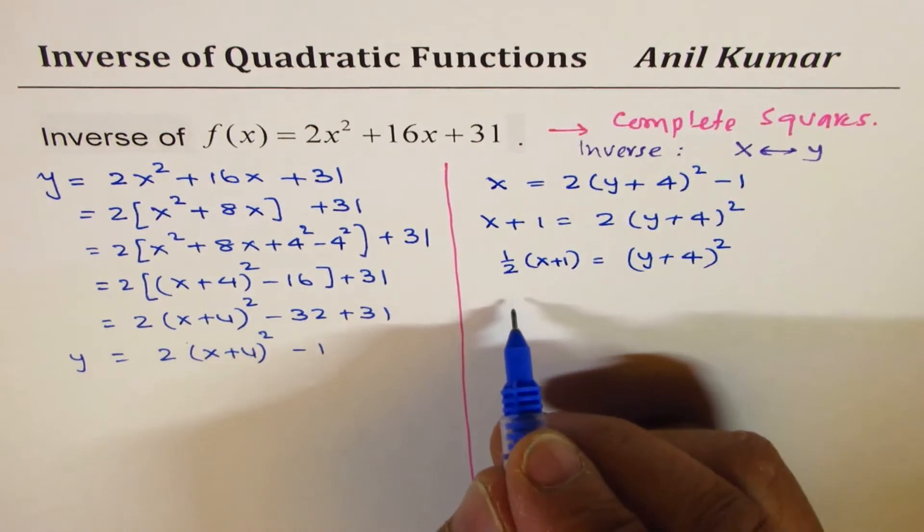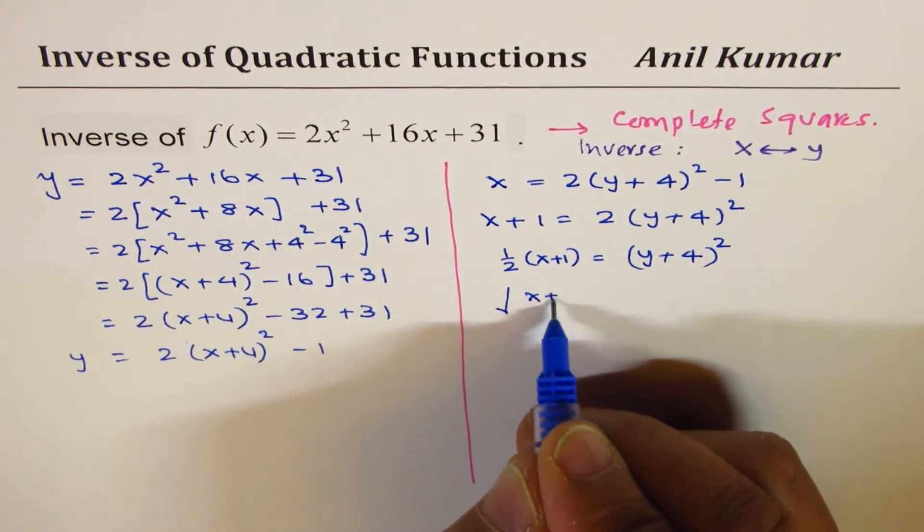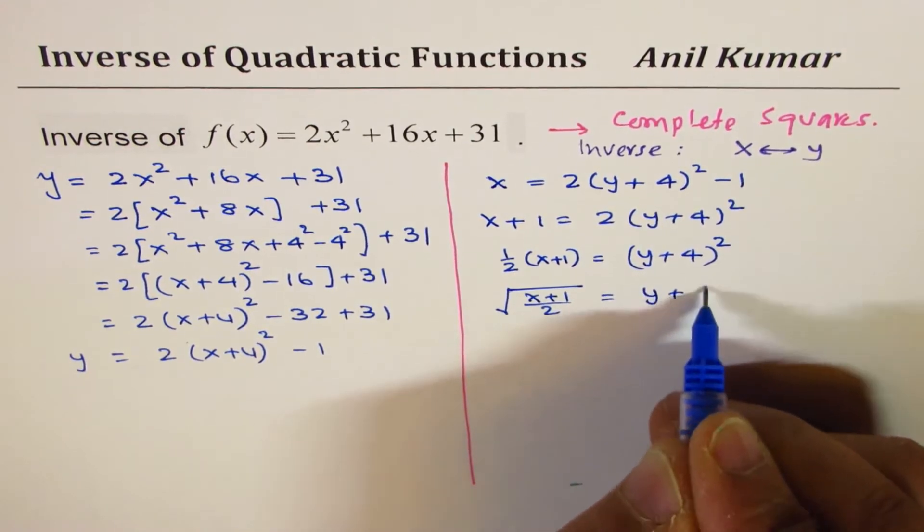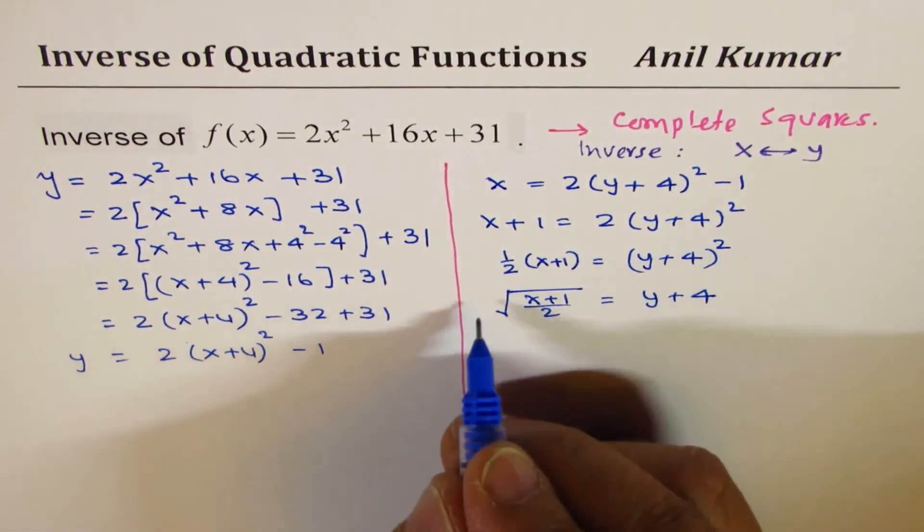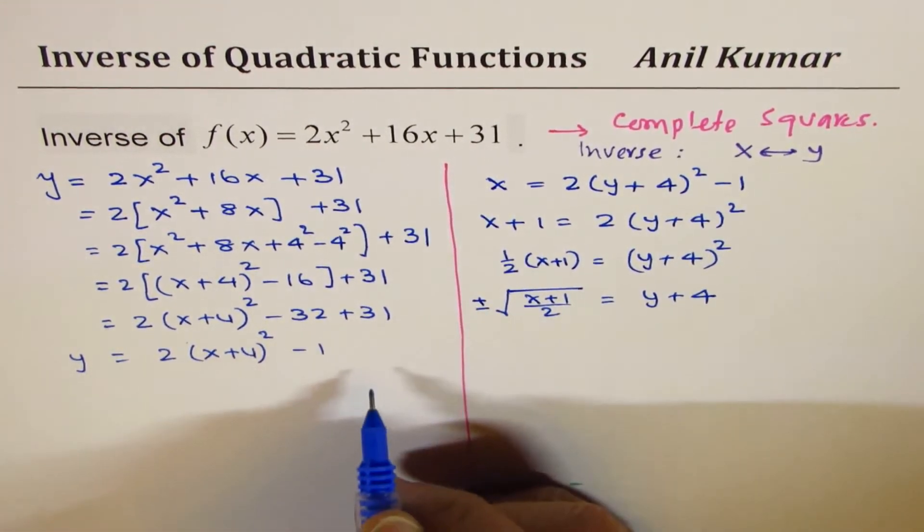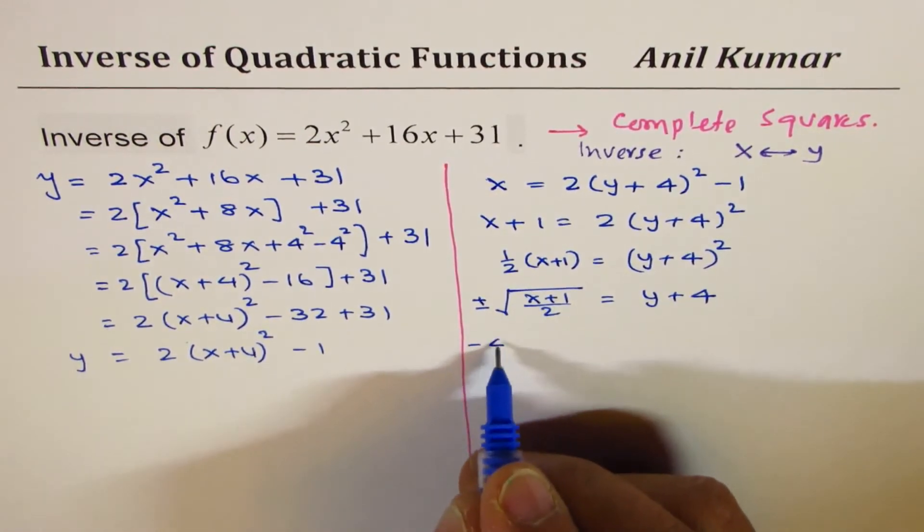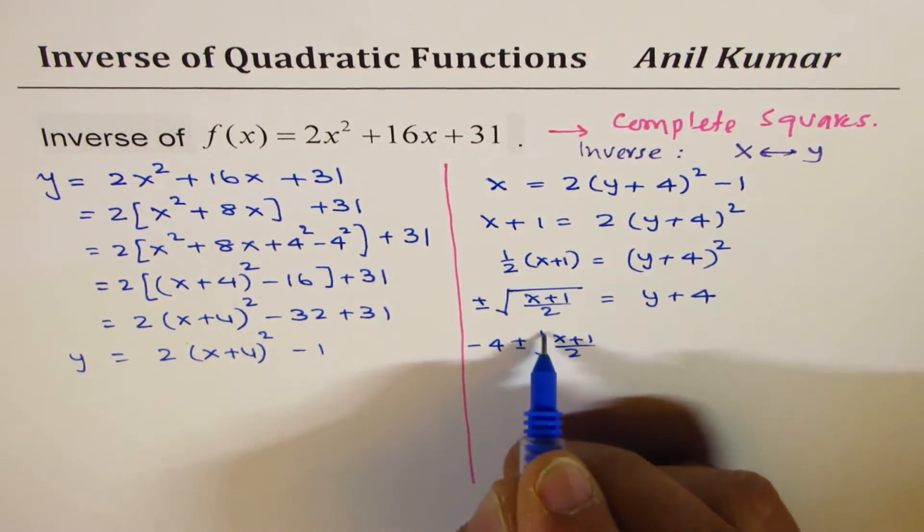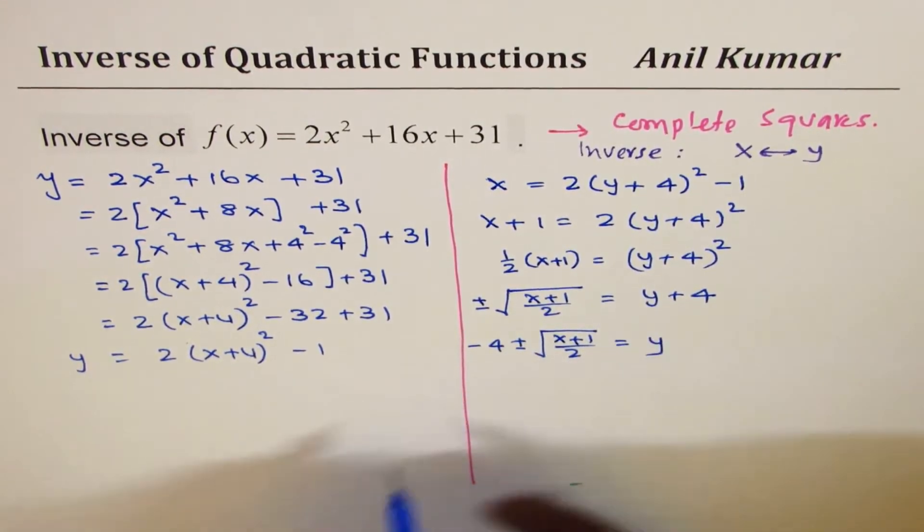Then we square root it. So, you could do a square root. Equals to y plus 4. Whenever you square root, you have to write plus and minus. Now, bring 4 this side. So, you get minus 4 plus minus square root of x plus 1 over 2 equals to y.